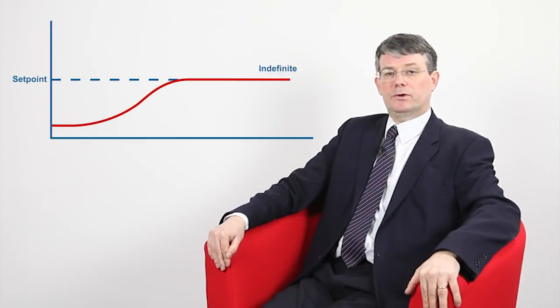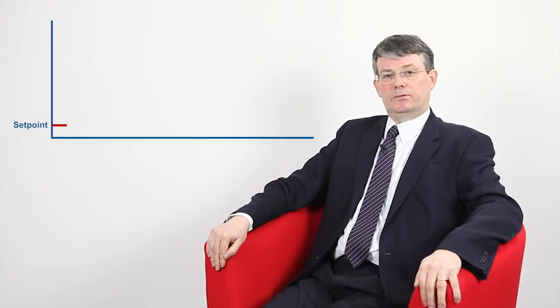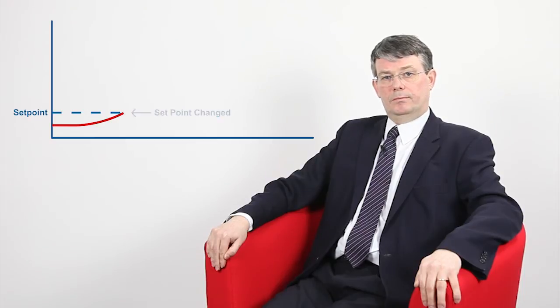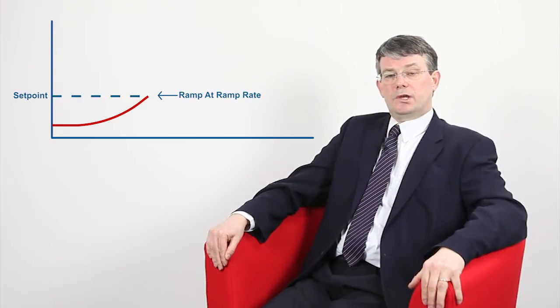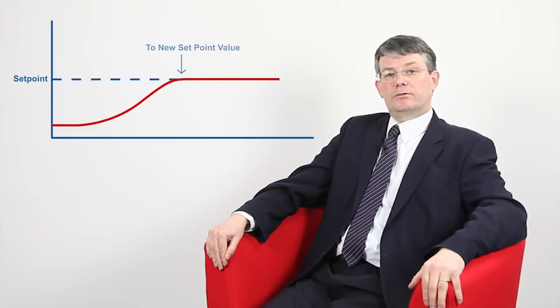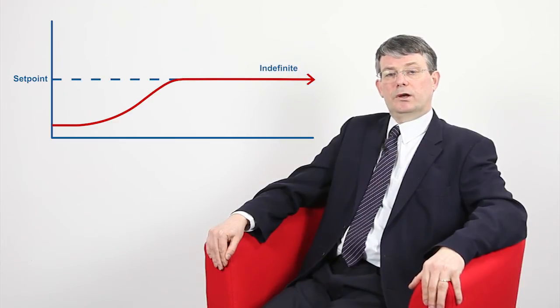With set point ramping, the effective set point value is moved slowly towards its final target value. The controller keeps the process in line with this effective set point value, thus protecting the process from harm. The user enters the set point ramp rate, and this is the value at which the effective set point is moved towards its final value.